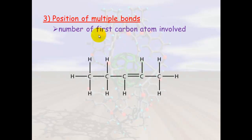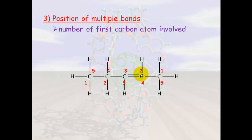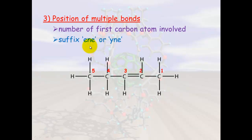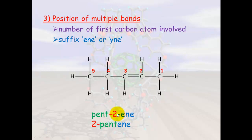If there are double bonds, we need to number them according to the first carbon involved. We highlight the main carbon chain and assign numbers. Numbering from one direction gives the double bond the number three; numbering from the other direction gives it number two — and we always want the lowest number. So we go with one, two, three, four, with the double bond on carbon two. We then add the suffix: because there's a double bond, the suffix is 'ene'. The number two can either be placed before 'pentene' or just before 'ene' to indicate the position of the double bond.